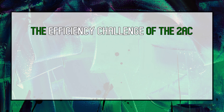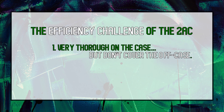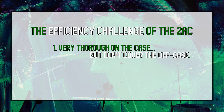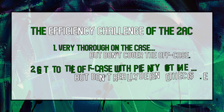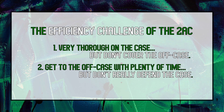Efficient argumentation is valuable in every debate speech, but it's particularly important in the context of 2AC case debating. 1NCs are often quite broad, challenging the affirmative to answer a myriad of off-case positions while also defending their case against a long list of analytical and evidence-based responses. The 2A needs to balance coverage with completeness, and diversity with depth. Sometimes the 2AC is very thorough on the case, but this takes up so much time that they don't effectively counter the negative's off-case positions. Other times the 2AC is very brief on the case, conserving time to respond to off-case positions, but then the negative dismantles their case in the 2NC and 2NR. Figuring out the right balance is difficult, but speaking efficiently gives you the best chance of getting it right.